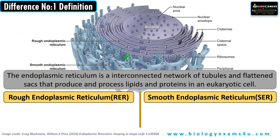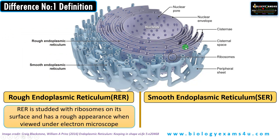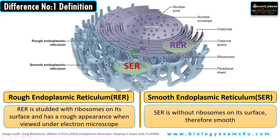Let's begin with why this name rough endoplasmic reticulum. This is a rough endoplasmic reticulum that is connected to the nuclear membrane. It is studded with ribosomes on the surface, so it has a rough appearance when viewed under the electron microscope — that's why it is called rough endoplasmic reticulum. The smooth endoplasmic reticulum, by contrast, is without ribosomes, therefore its surface is smooth.